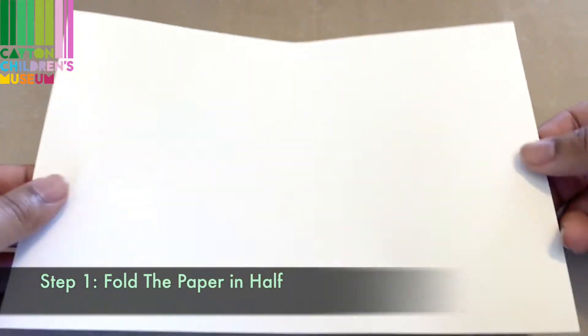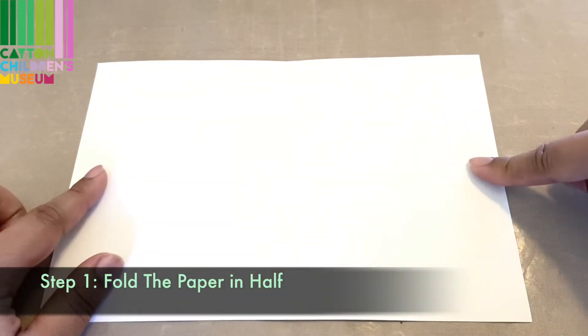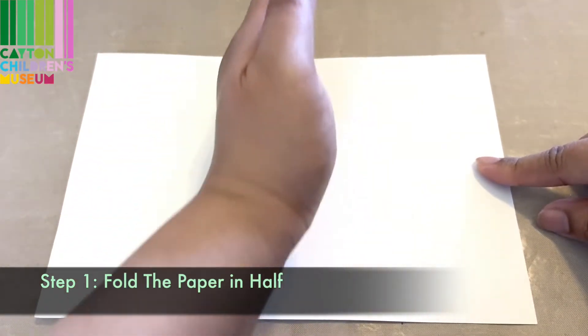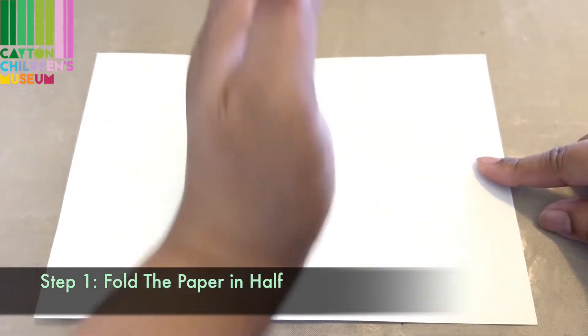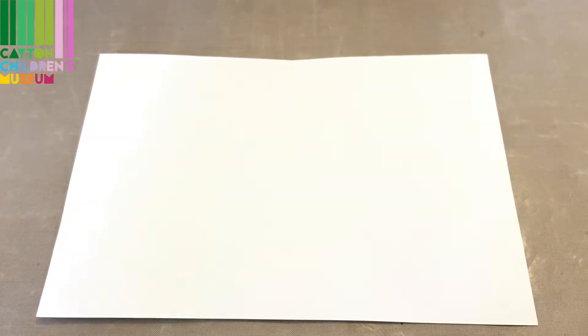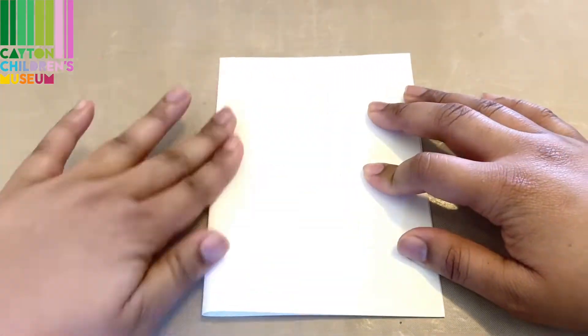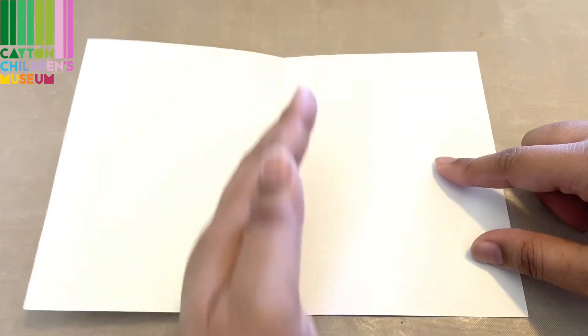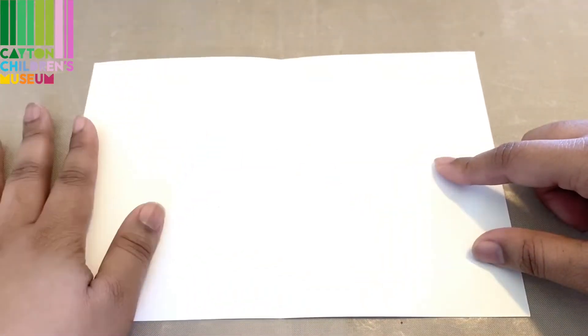The first thing you'll want to do is fold your paper in half. This will let you know where the division is, which side will be light and which side will be day. Now that I've got my paper folded in half, I'll know which side is the day and which side is the night.